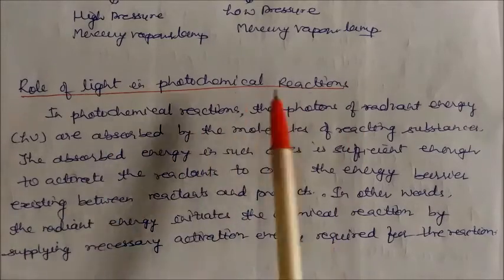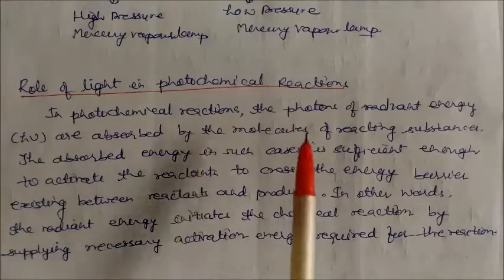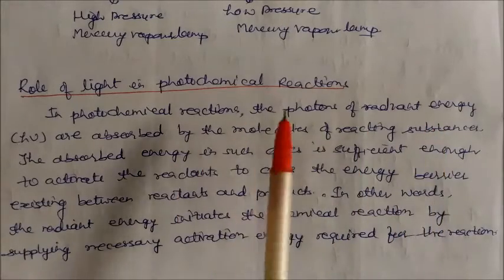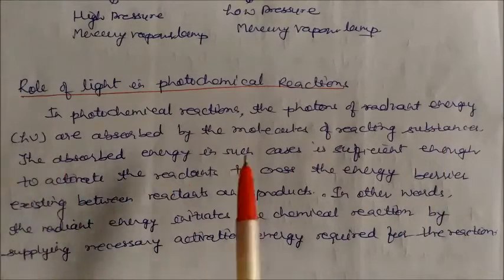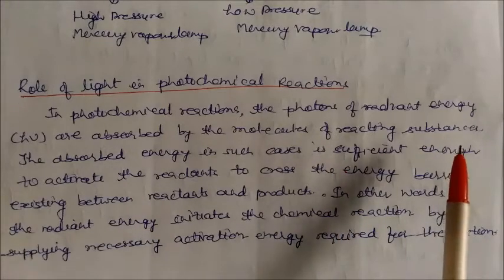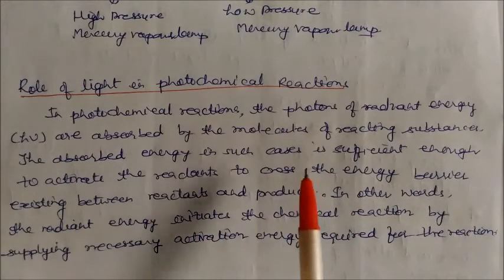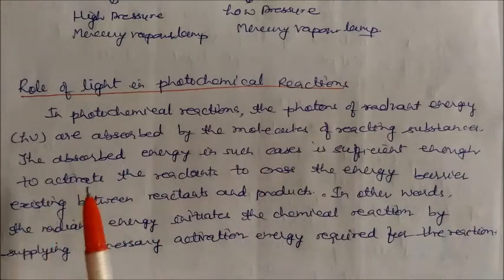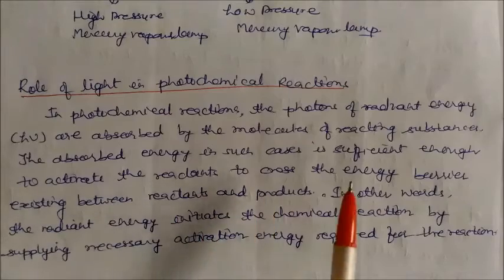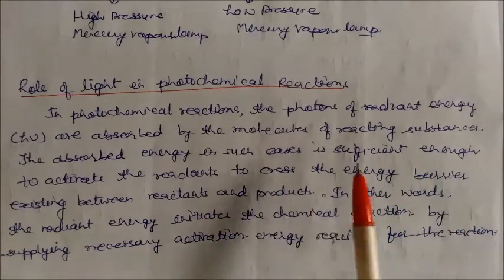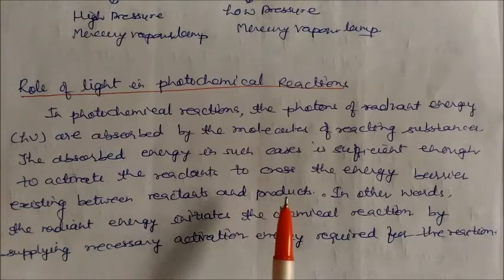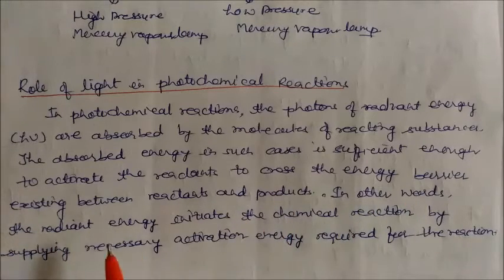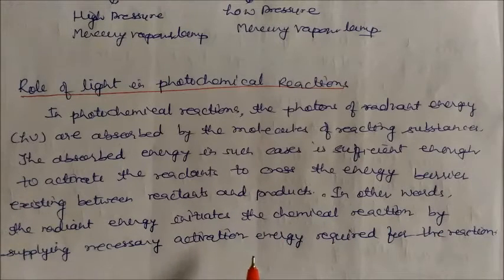In a photochemical reaction, photons of radiant energy (hν) are absorbed by molecules of the reacting substances. The absorbed energy is sufficient to activate the reactants to cross the energy barrier — the threshold energy existing between reactants and products. In other words, the radiant energy initiates chemical reactions by supplying the necessary activation energy required for the reaction.